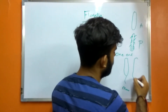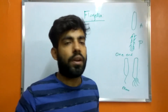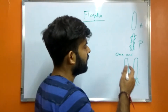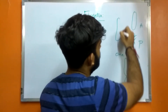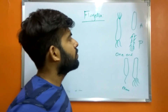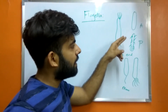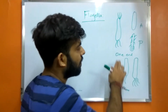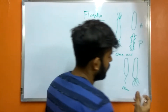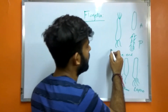If a bacterium has a tuft of flagella at one end, it is known as lophotricous. If it has flagella at both ends, it is known as amphitricous. To summarize: no flagella — atricous; flagella over entire surface — peritricous; one flagellum at one end — monotricous; tuft at one end — lophotricous; flagella at both ends — amphitricous.